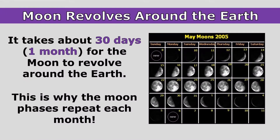It takes about 30 days, or about one month, for the moon to revolve around the earth. This is why the moon phases repeat each month — we normally see one new moon and one full moon in a month. The word month actually comes from the word moon, but it's not exactly one month because not all months have the same number of days.